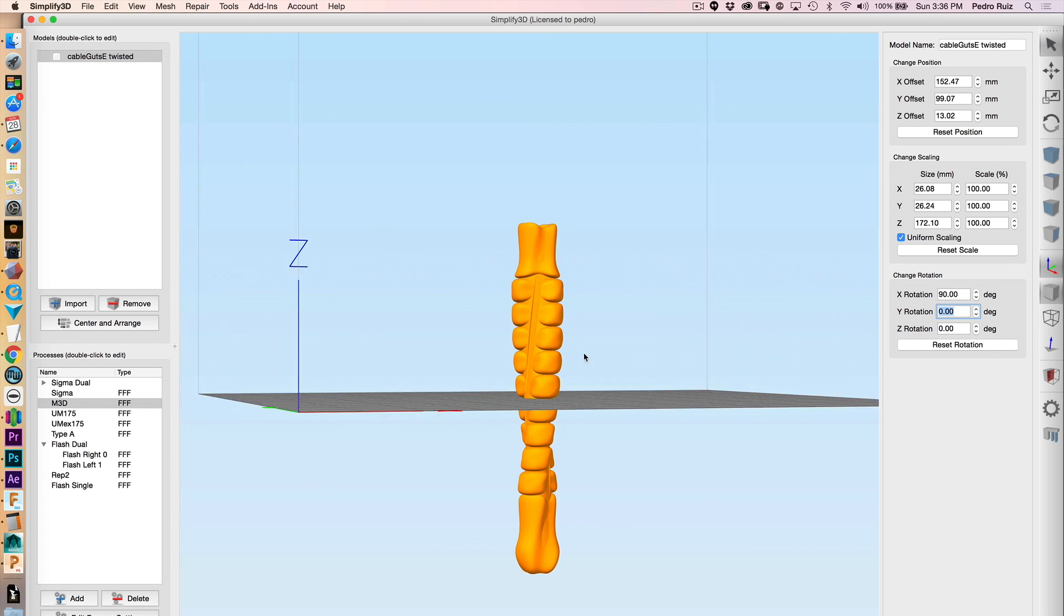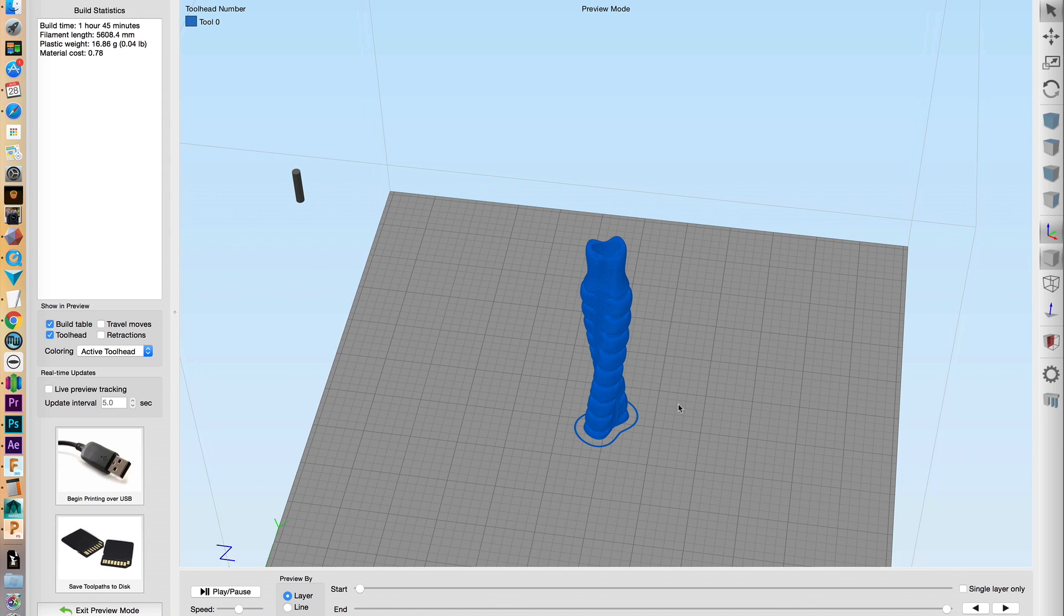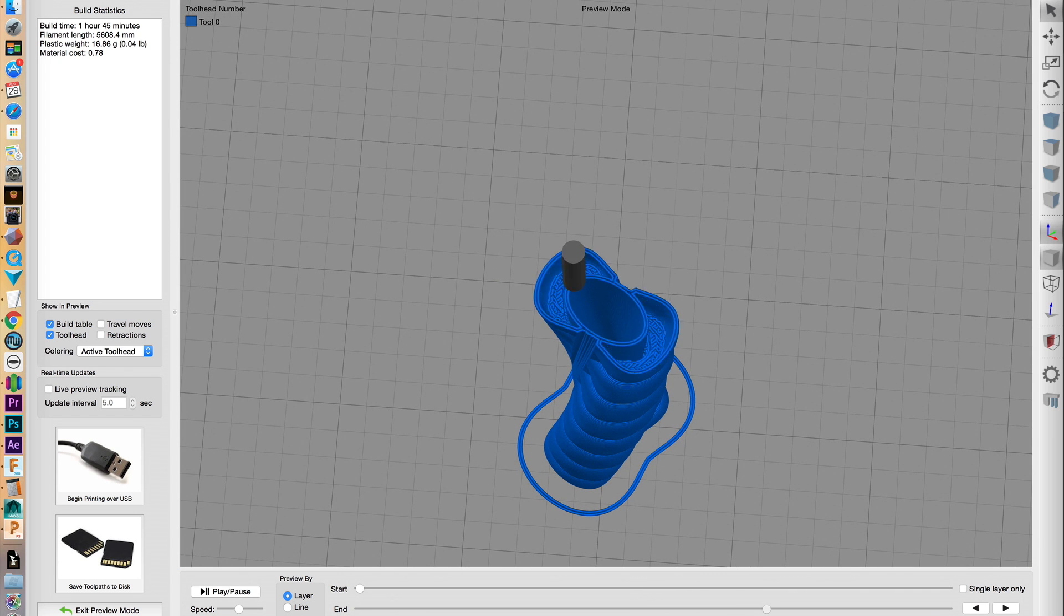Using Simplify3D, we imported the model and flattened the bottom by lowering it below the grid. This helps provide better bed adhesion and lets us 3D print without any support material. A 0% infill will make the part hollow and essentially speeds up the print time.